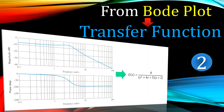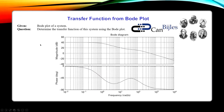Hi everyone and welcome to a new video about control systems topics. We continue with the determination of our transfer function from a given Bode diagram or Bode plot. This is our second example. What is given? The Bode plot of a system is given as shown here. We have the gain plot and we have the phase plot. What we would like to know is the transfer function of this system using this Bode plot.